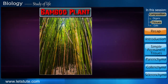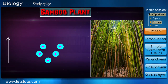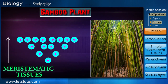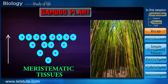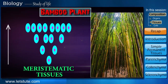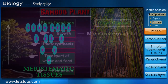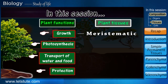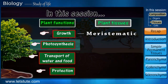Just like all plants, the bamboo's growth is due to cell division, as we've seen in the meristematic tissues. In addition to this, the cells of the bamboo plant also elongate or increase in length, thus resulting in its rapid growth. Moving on, in this session we'll see the tissues associated with the next plant function.